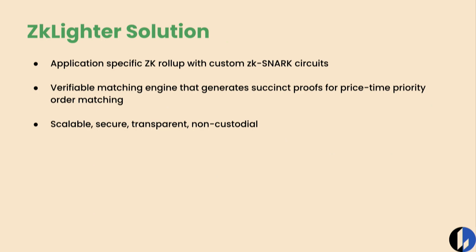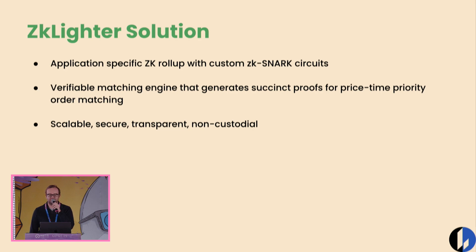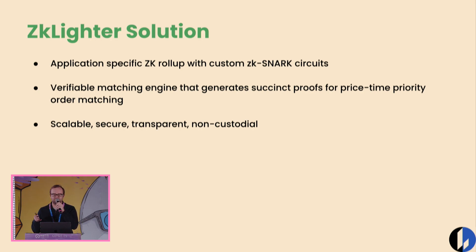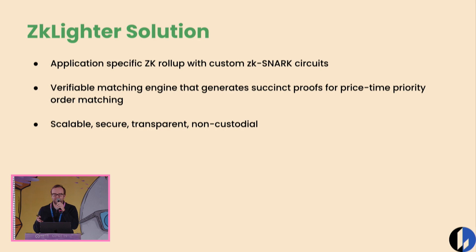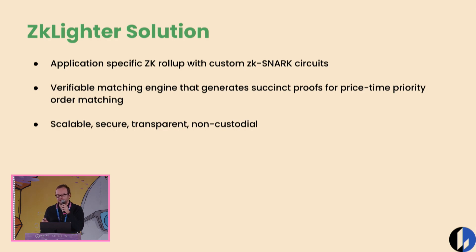The solution we came up with is a very general solution that could be used for many types of marketplaces: it's an application-specific ZK rollup with custom ZK SNARK circuits. ZK Lighter has a verifiable matching engine that generates succinct proofs — this is where the ZK SNARKs come in — for price-time priority order matching. In other words, it's guaranteed that when you send an order, the order was matched fairly. It has all the other properties you want: scalable, secure, transparent, and non-custodial.